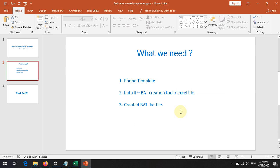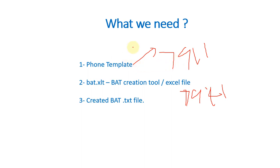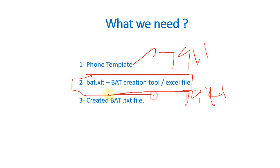For phone bulk administration, we need three things. First is a phone template — we need to create a phone template in Call Manager. If you have several phone types, for example a 7911 and a 7941, you need two separate phone templates. For Jabber you also need a separate one. So you need a separate template per phone model, an Excel file per phone model, and from that Excel file you export a BAT text file.